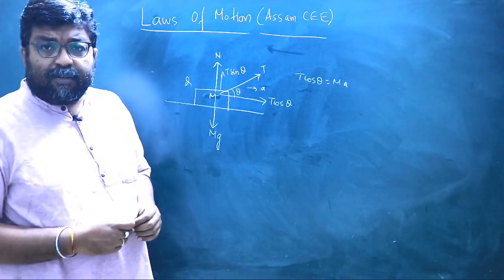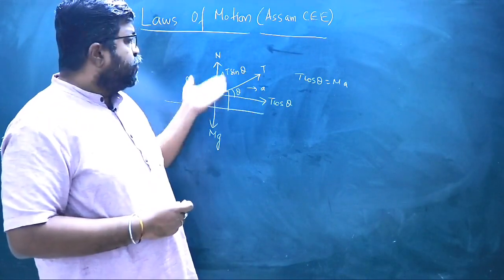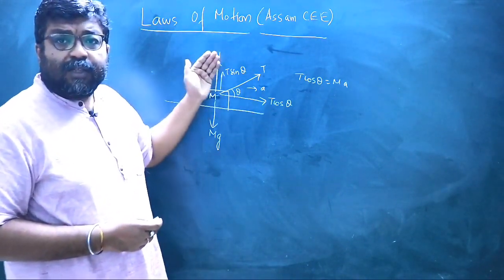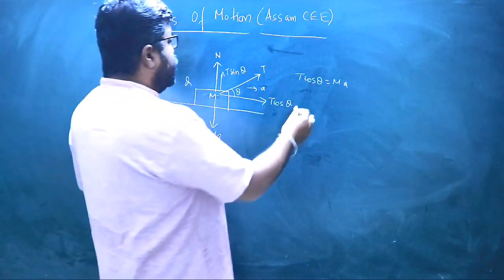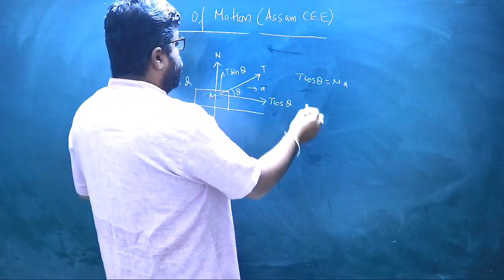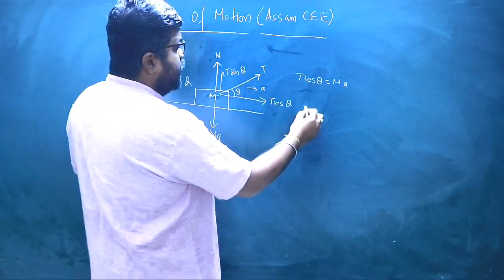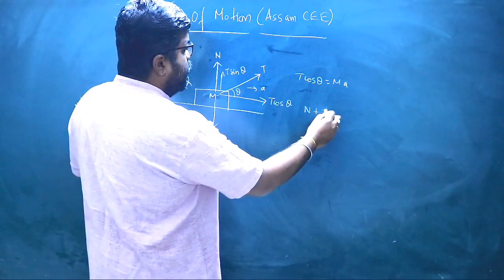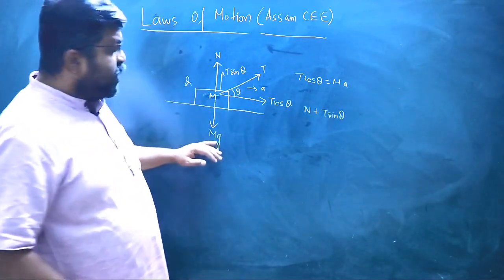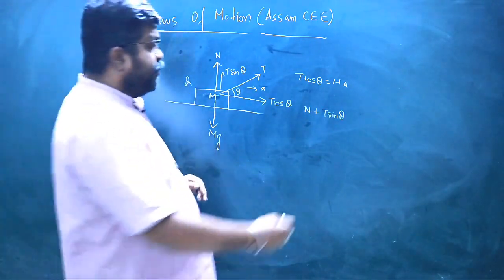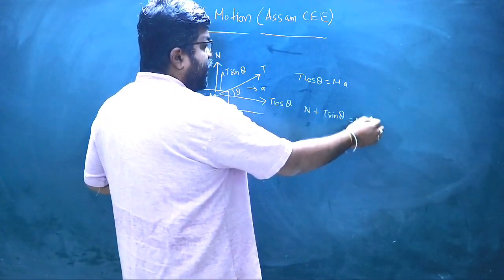In the vertical direction, there is no motion, so we apply the equilibrium condition: total upward force equals total downward force. The upward forces are N and T sinθ, and the downward force is Mg. So: N + T sinθ = Mg.